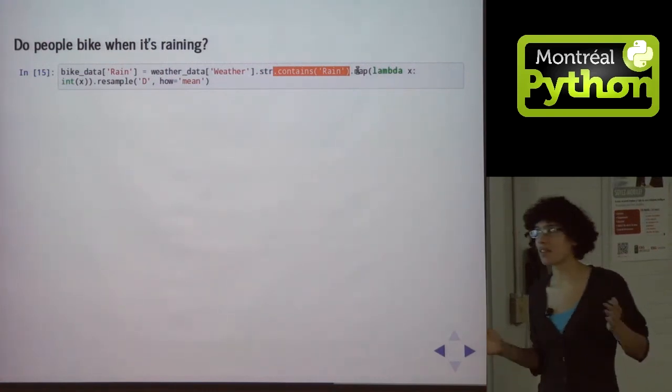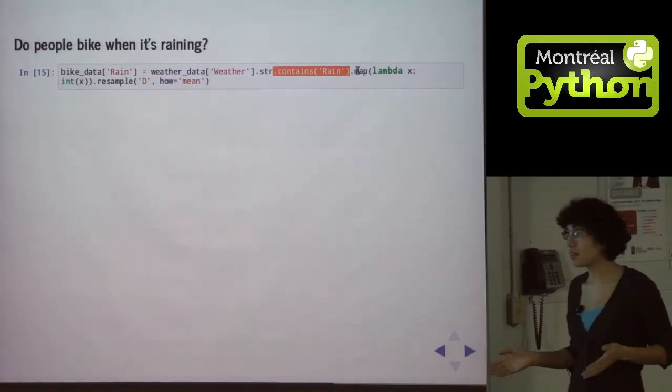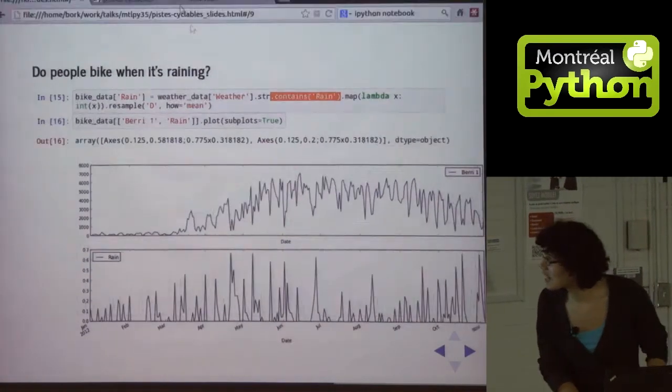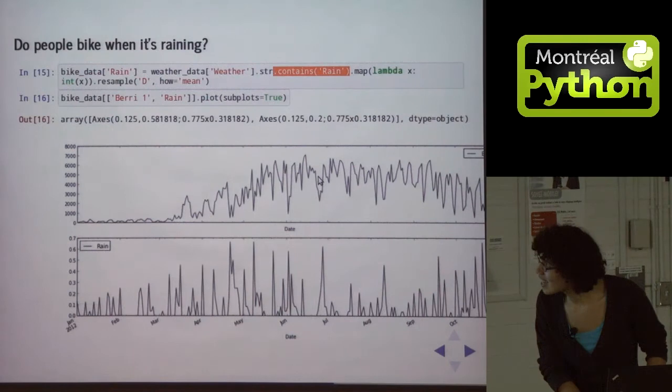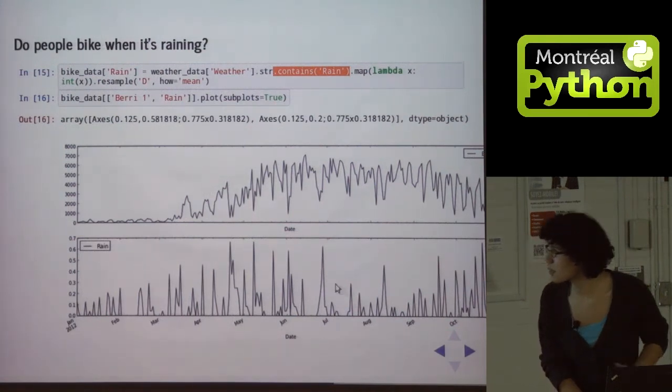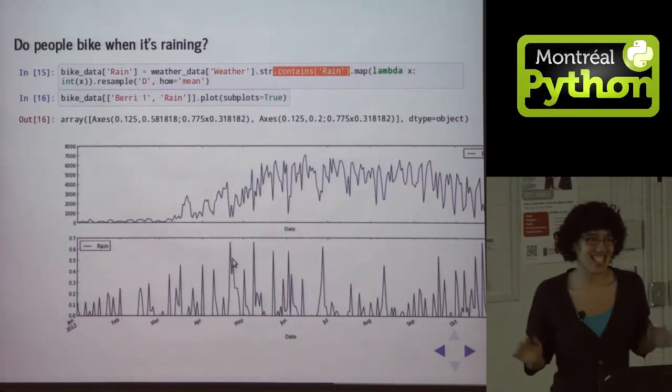So what that gives us is the percentage of the day that it was raining. So it's 0.5 if it was raining for half the day, 1 if it was raining for the whole day. And if we plot that, we get another nice graph, which says, hey, if we look at this spike down, surprise, it was raining. And then there's some similar things. So this still isn't perfect, but do you believe me that this is telling us something?